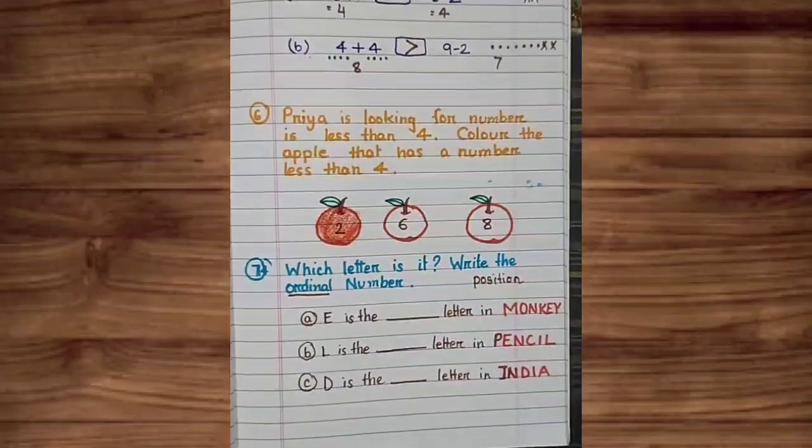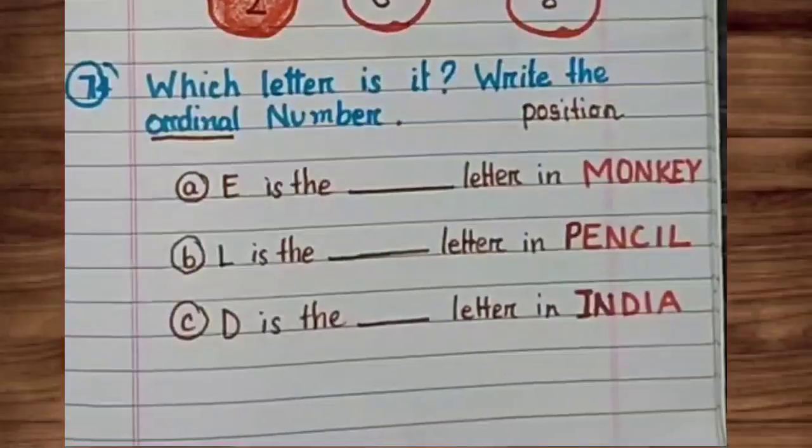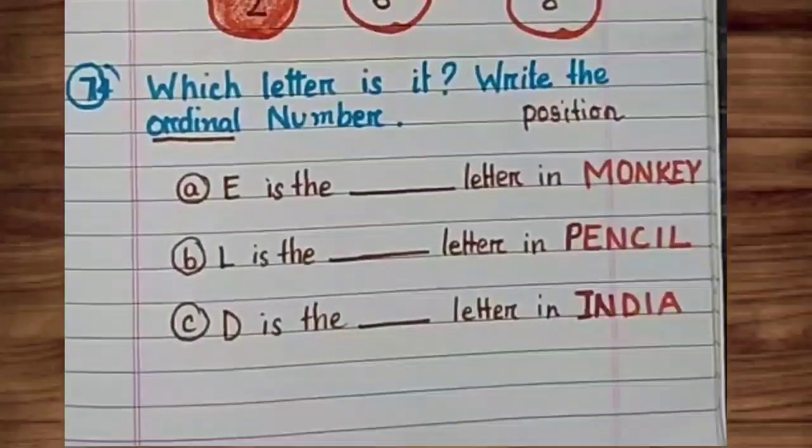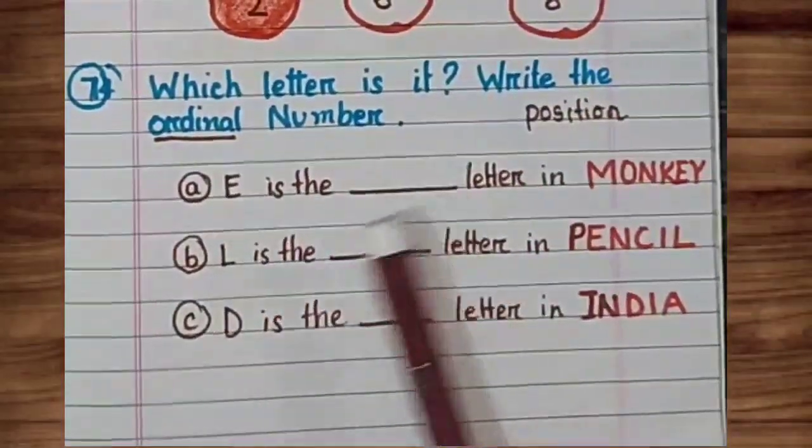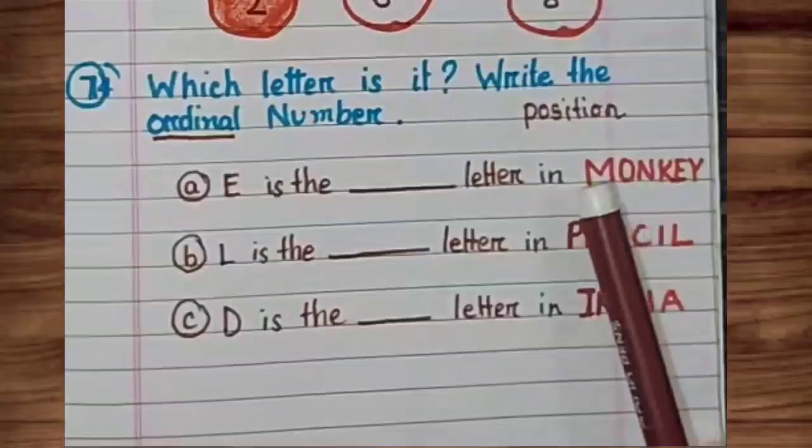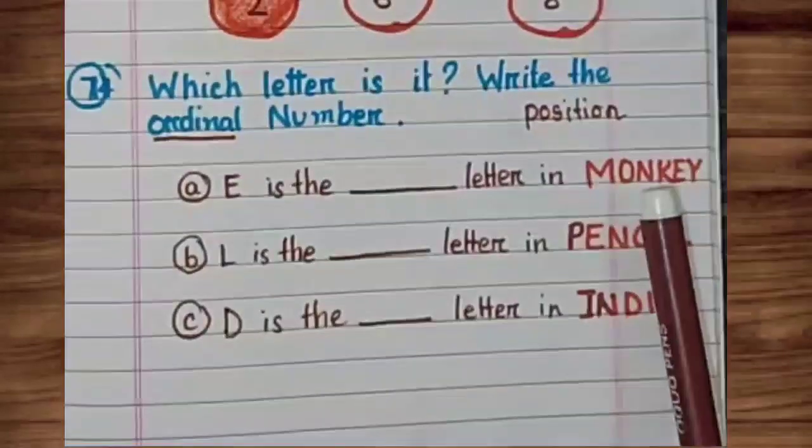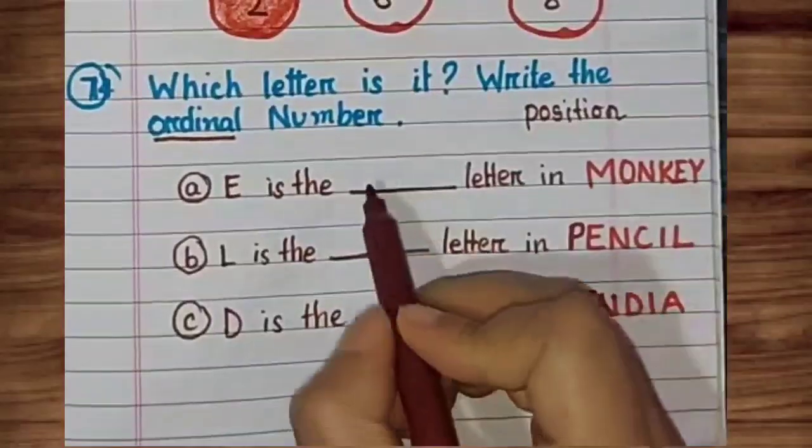Count ki jiye. If we start from M, M is the first position. O is the second position. N is the third position. K is the fourth position. E is the fifth position.